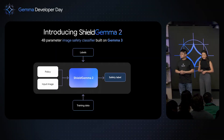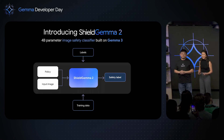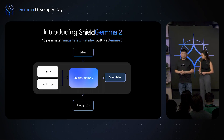It's quite simple. You take in just your defined policy, which you can customize later, as well as your given input image. Feed this into Shield Gemma 2 and you get out probabilities of a yes or no token for your safety labels — yes meaning it did violate the policy, and no meaning it didn't.